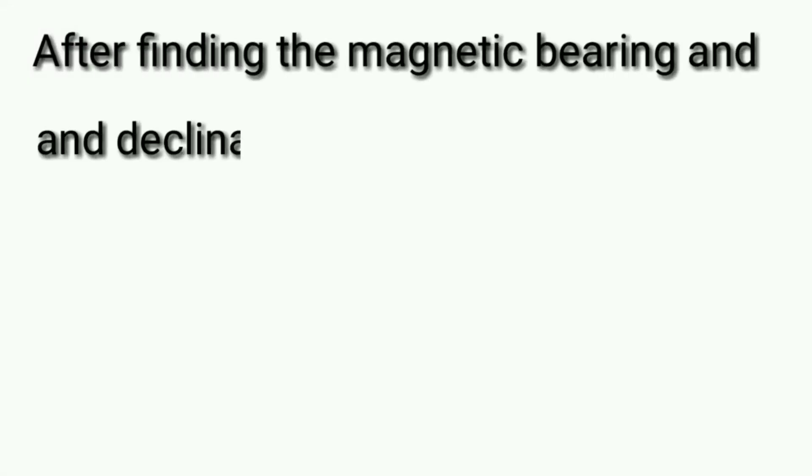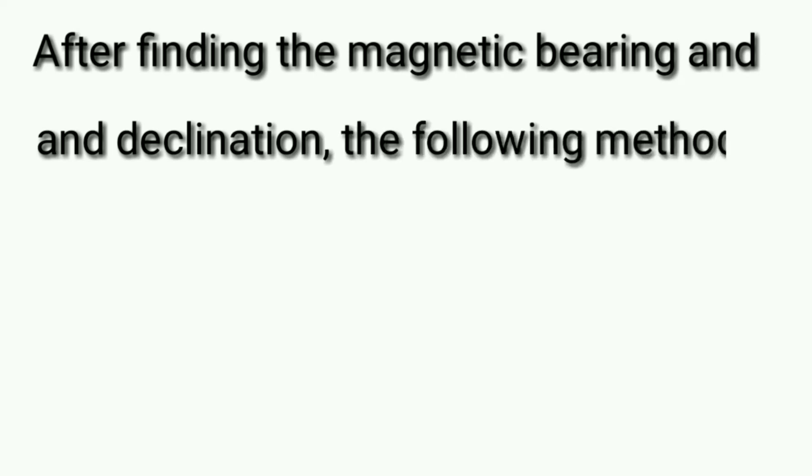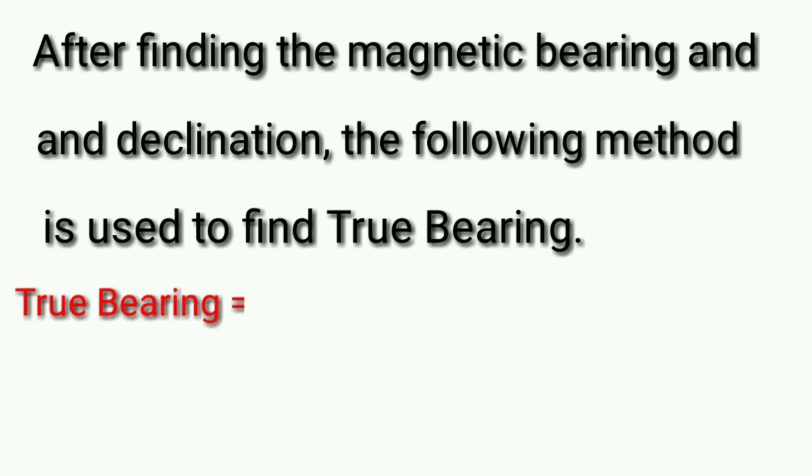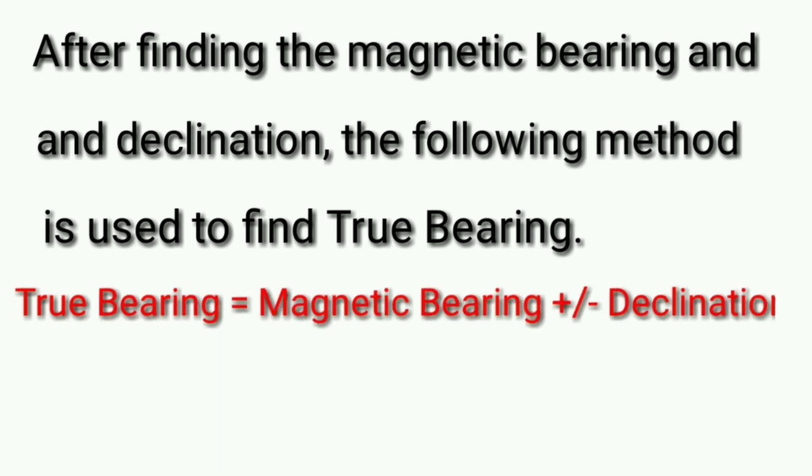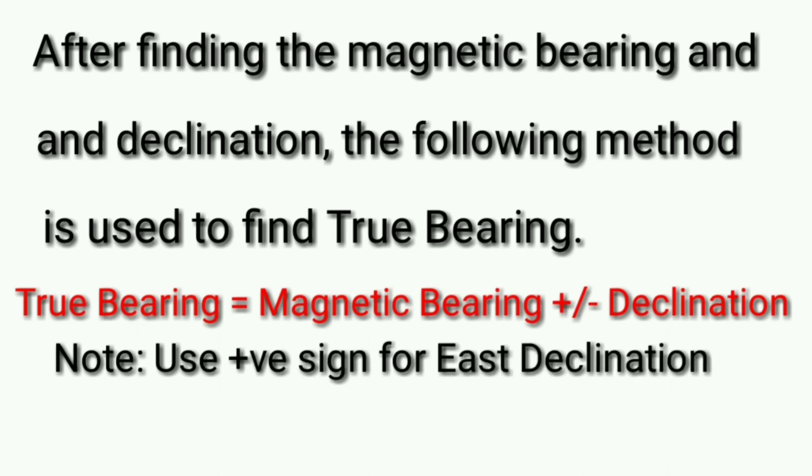After finding the magnetic bearing and declination, the following method is used to find true bearing. True bearing equals magnetic bearing plus or minus declination. Use positive sign for east declination and negative for west declination.